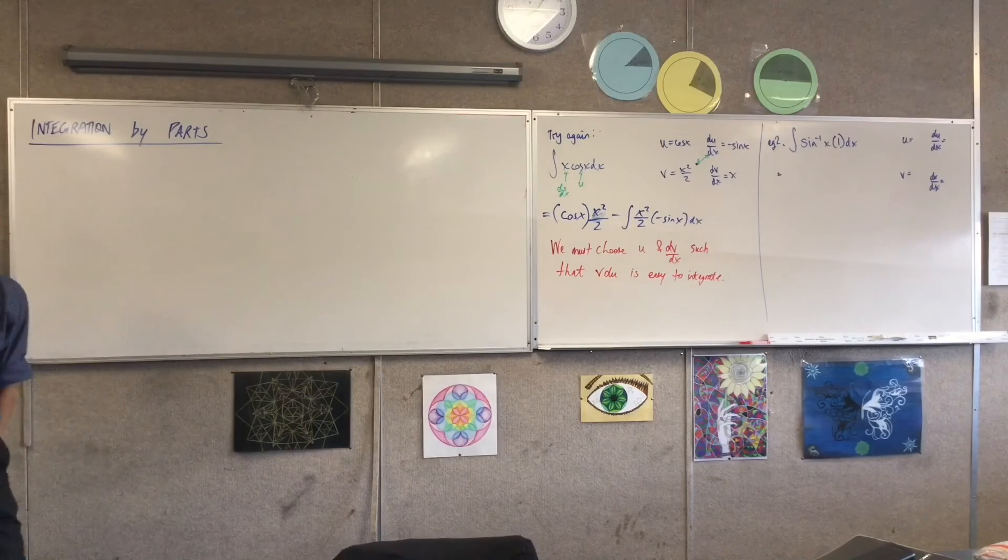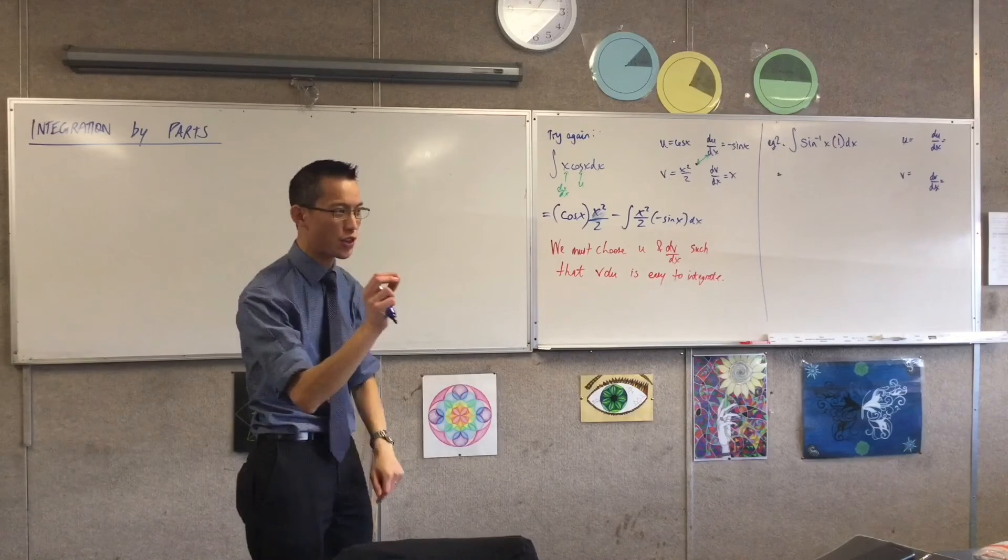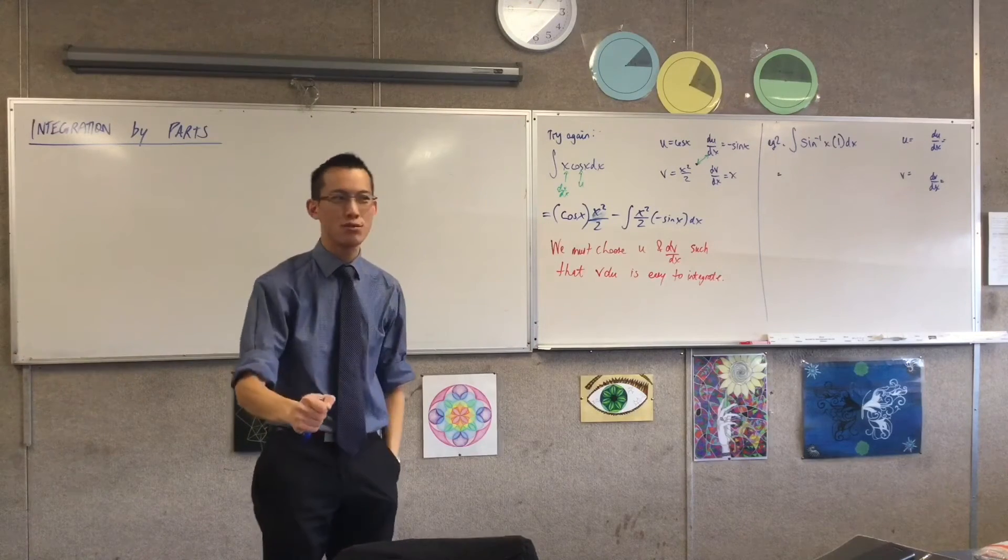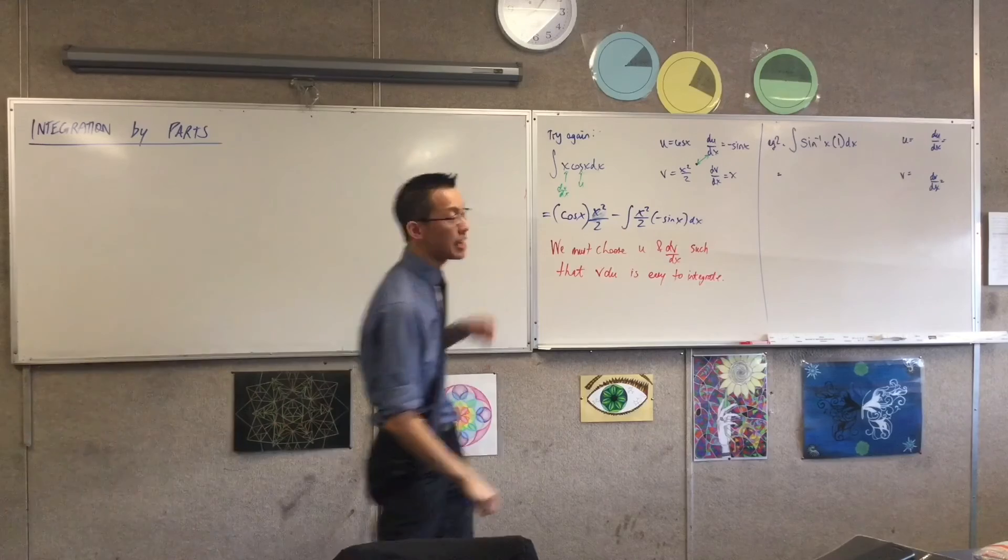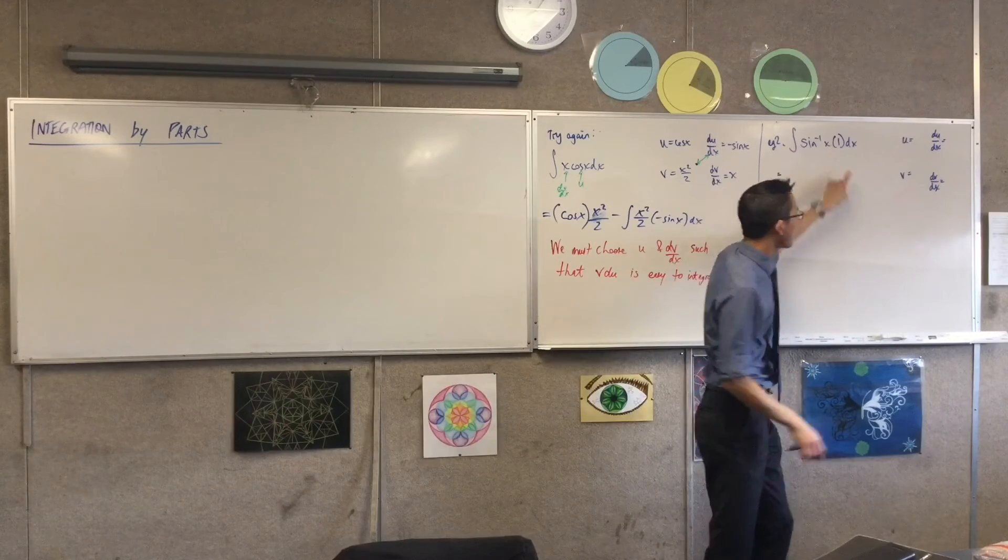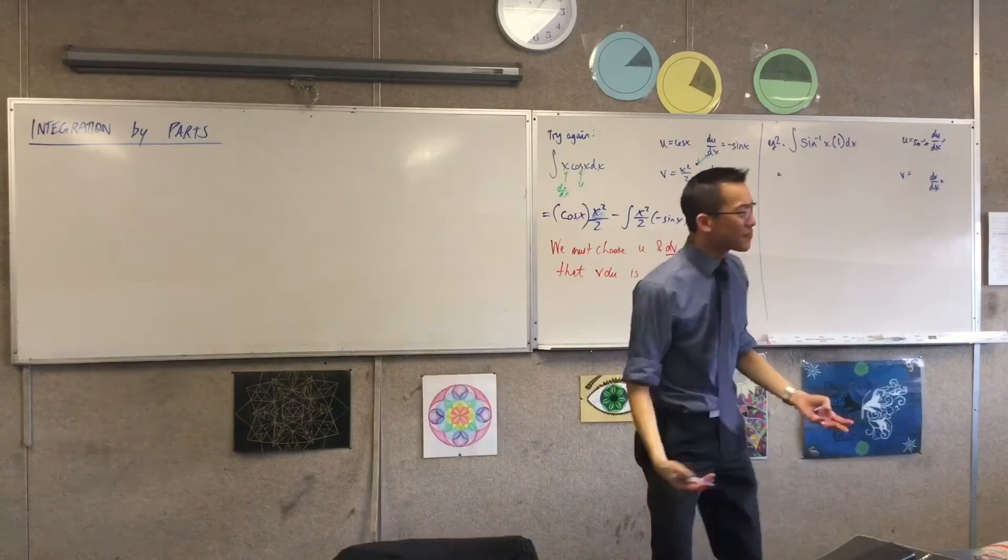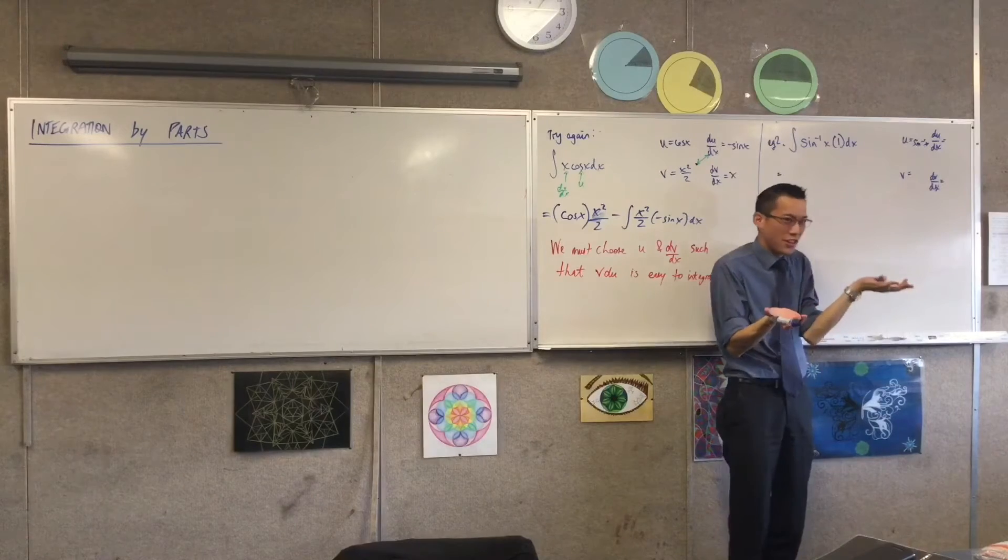As soon as you start writing your pair of primitives and your pair of derivatives, it becomes obvious to you which one has to be u and which one has to be dv/dx if what you're choosing from is these two, right? u has to be sine inverse. Why? Because you can't really integrate. Well, okay, so let's imagine if you're like,